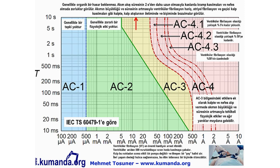IEC 60479'daki grafik insan üzerinden geçen akım ve süreye bağlı olarak insanda oluşan etkiyi gösteriyor. AC1 alanı 500 μA'ye kadar — genellikle tepki yok. AC2 alanı 500 μA'den başlayıp süre uzadıkça küçülüyor — zararlı fizyolojik etki genellikle yok. AC3 alanında (sarı) organik hasar beklenmez ancak akım 2 saniyeden uzun sürerse kaslarda kramp, nefes almada zorluk ve kalp atışlarında bozulmalar görülür.